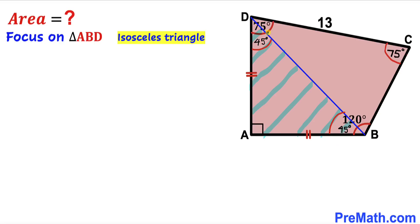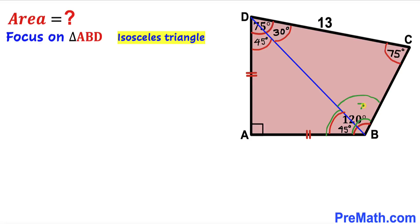Now let's make an observation. We know that the whole angle at A is 75 degrees and the angle from triangle ABD at that vertex is 45 degrees, so the remaining angle is 30 degrees. Likewise, the angle at B is 120 degrees and the angle from triangle ABD is 45 degrees, so the remaining angle in triangle BCD at B is 75 degrees.